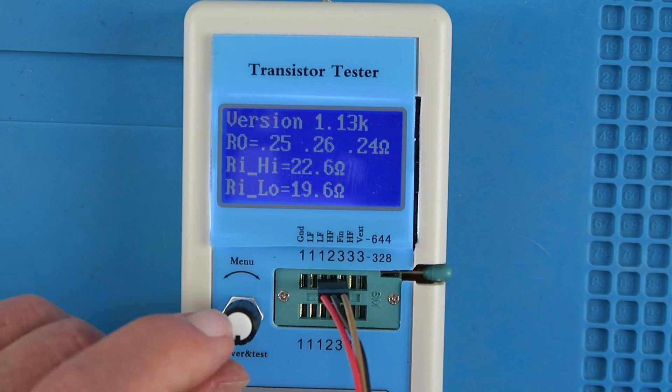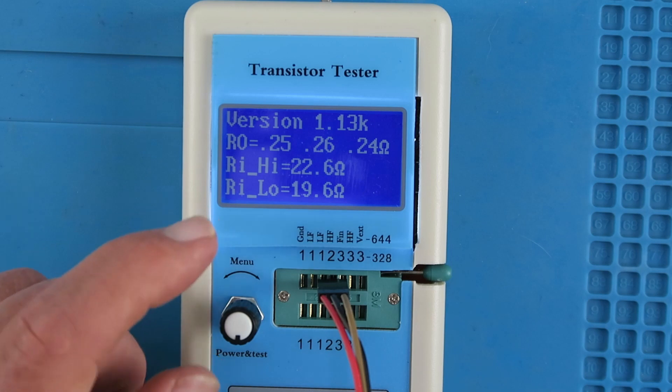The show data option gives us the version of the firmware in use and the values that were detected when the self-test was run to calibrate the unit.